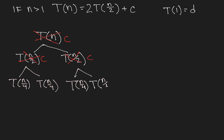Well, I'll bet you can't guess what's going to happen next. So we're going to replace t of n over 4 with 2 copies of t of n over 8 plus c, wherever we see t of n over 4.